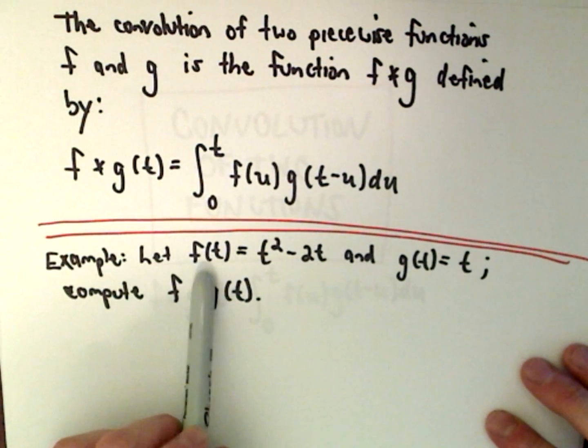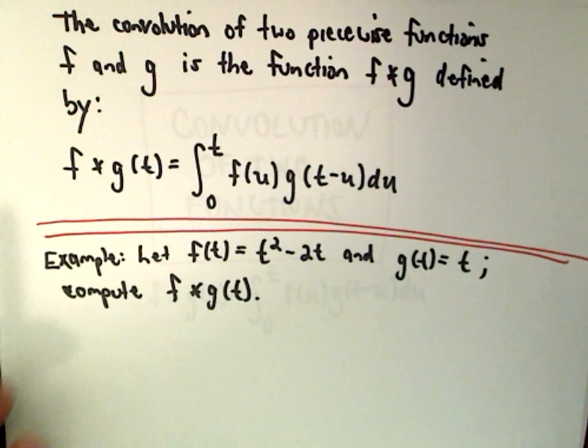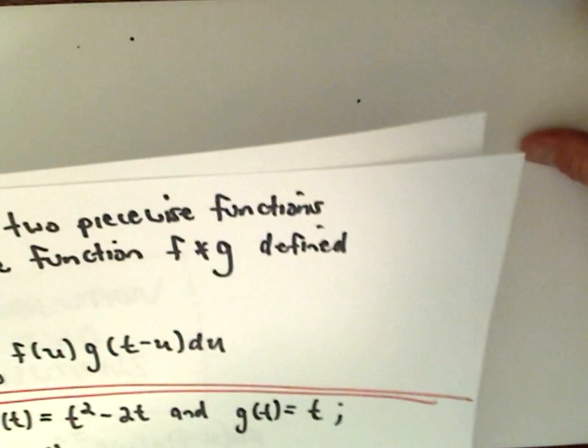We're going to find the convolution of two functions here. We've got f of t which is t squared minus 2t, and g of t which just equals t, and we're going to find the convolution. Again, a very basic example.